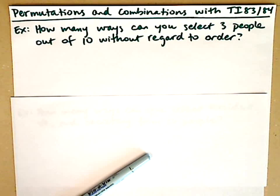This video explains how to compute permutations and combinations with the TI-83 or 84. Let's look at the first example. The question says, how many ways can you select 3 people out of 10 without regard to order?